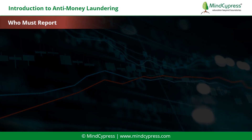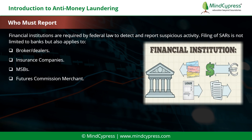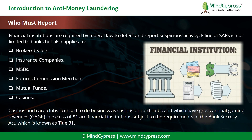Let's understand who must report. Financial institutions are required by federal law to detect and report suspicious activity. Filing of SARs is not limited to banks but also applies to broker-dealers, insurance companies, MSBs, futures commission merchants, mutual funds, and casinos. Casinos and card clubs licensed to do business with gross annual gaming revenues in excess of $1 million, or financial institutions subject to the requirements of the Bank Secrecy Act known as Title 31.